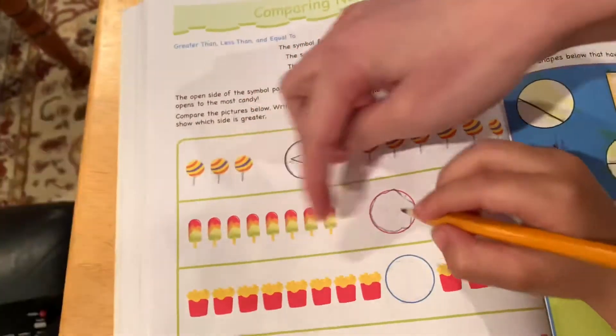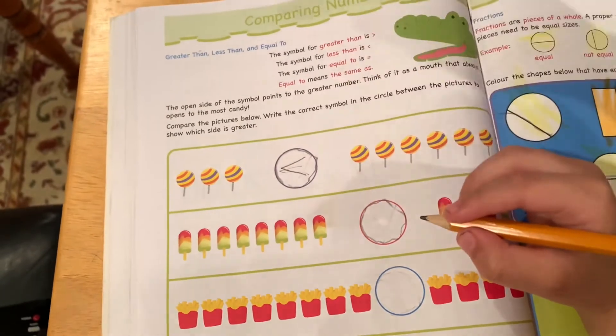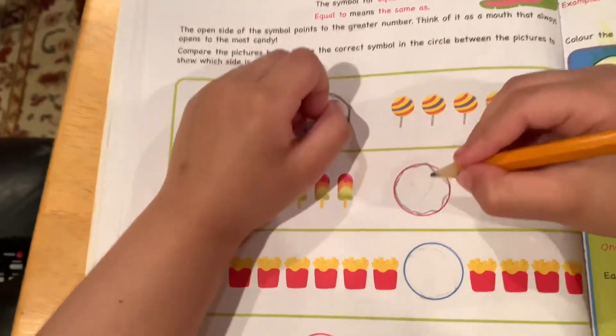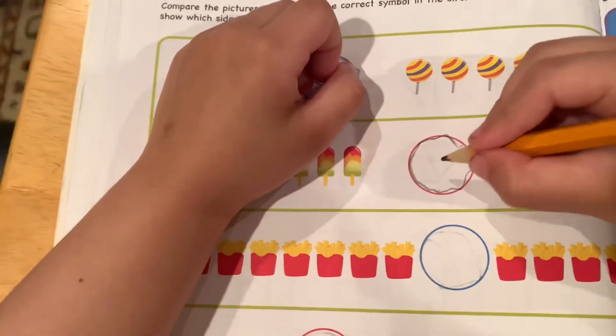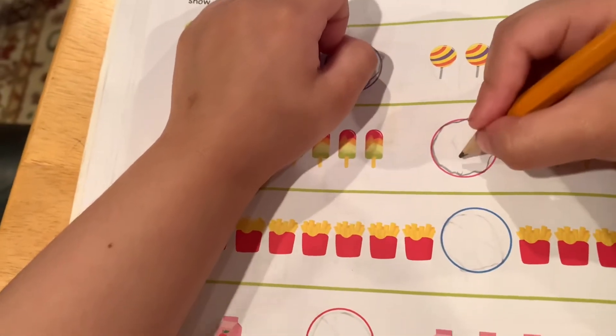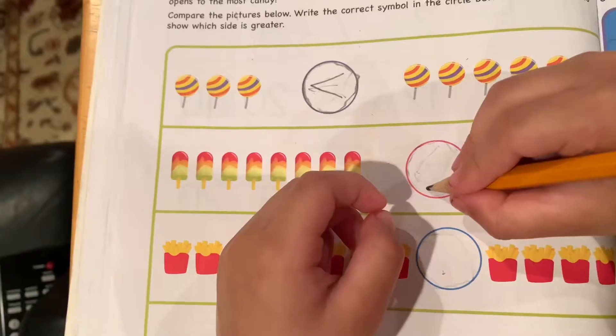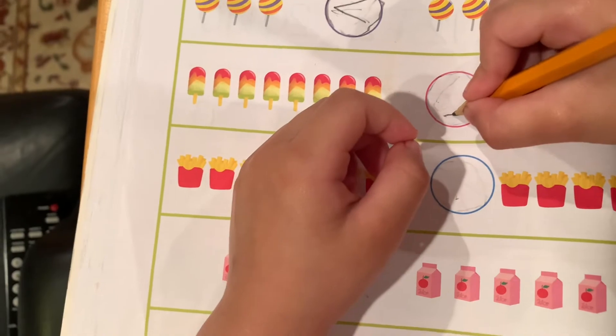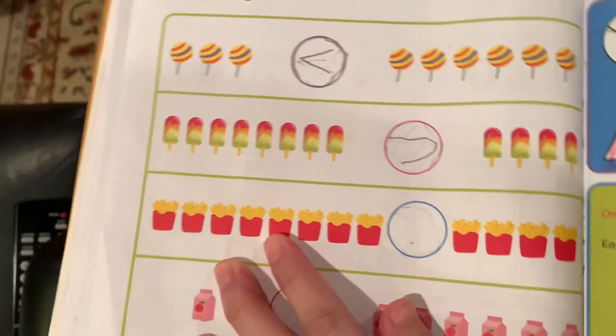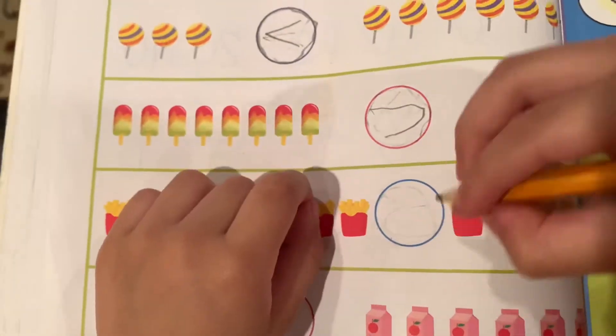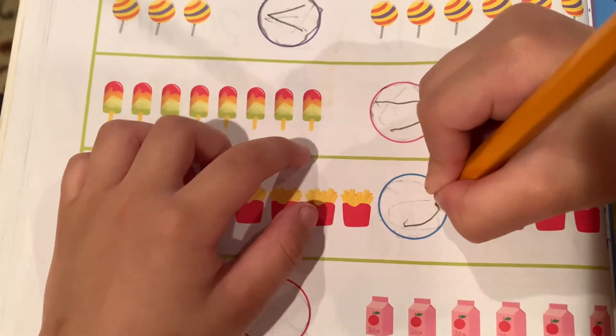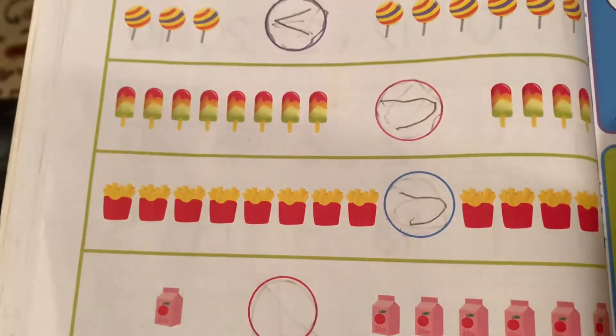So if this is more candy, you put the mouth to the left. You open the mouth to the most lolly. Okay. Good. Next one. Fries. So which fries get the most? This one. Okay. How about the juice?